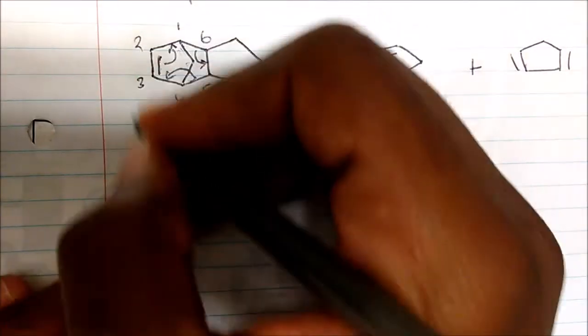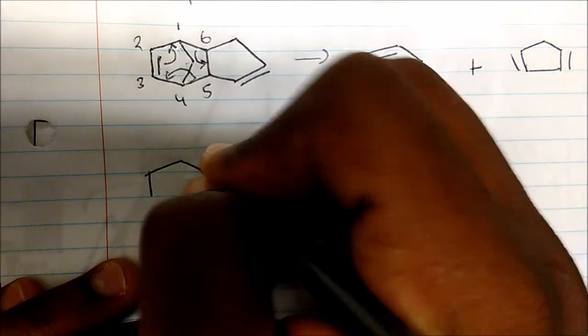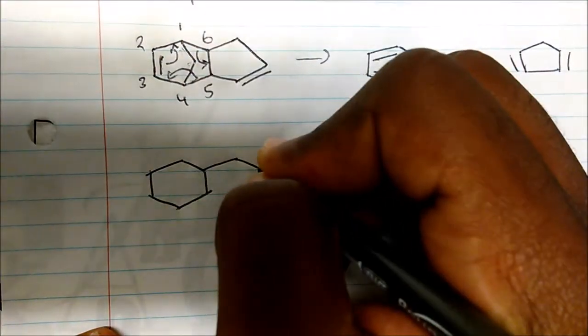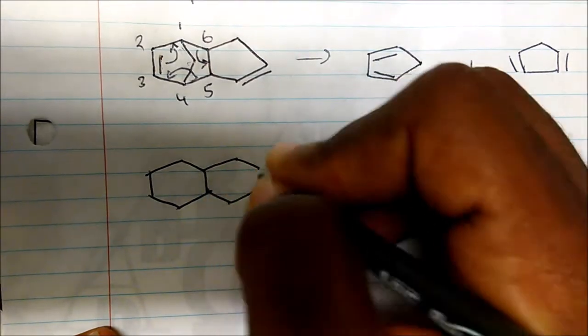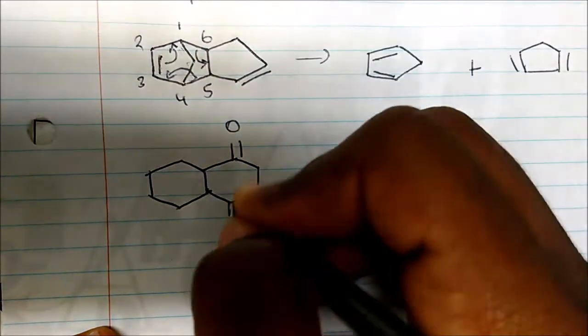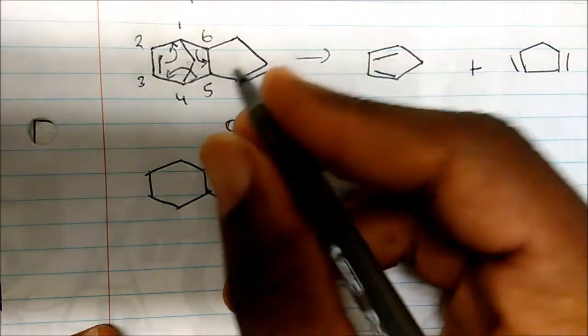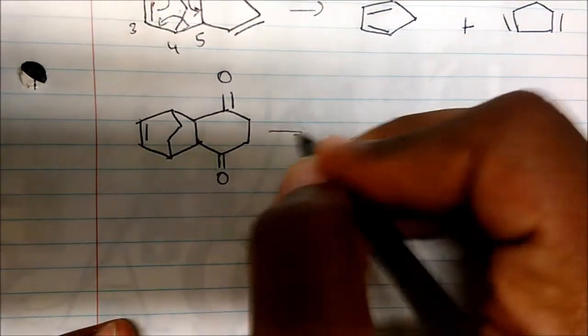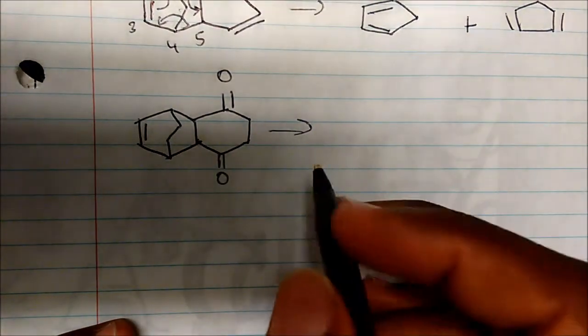Now let's look at another example. You'll notice the pattern — it's just a pattern. If I form a bond between six and one, I'm going to break that bond. So if we're given this molecule, what are the starting reactants?